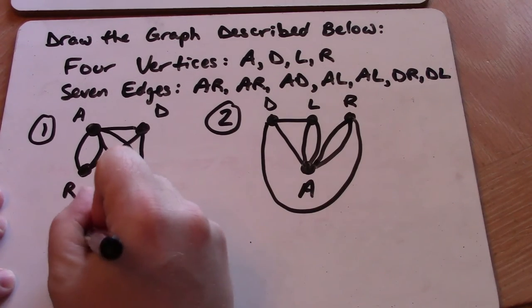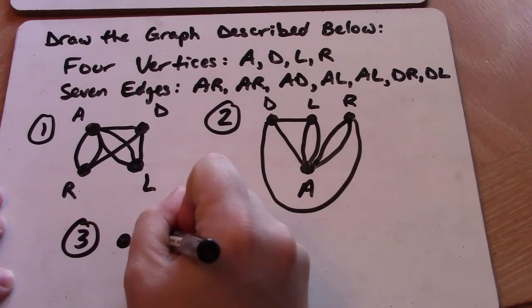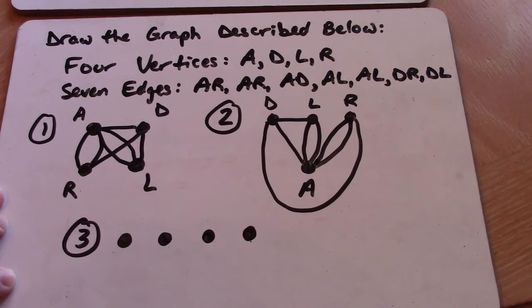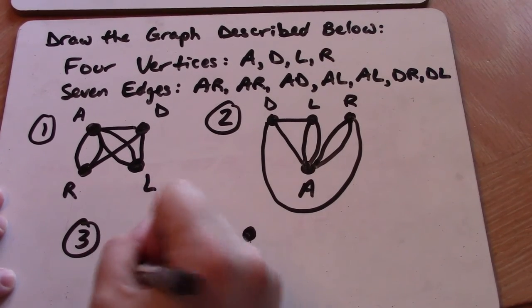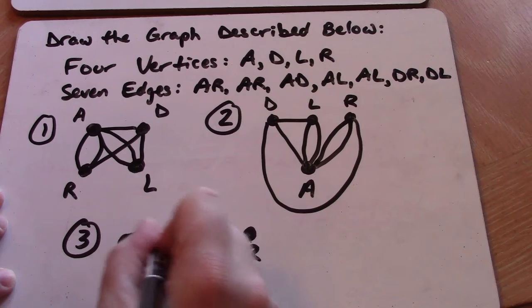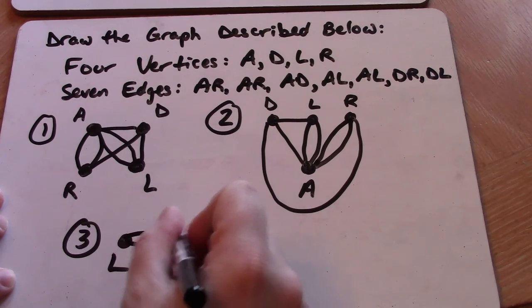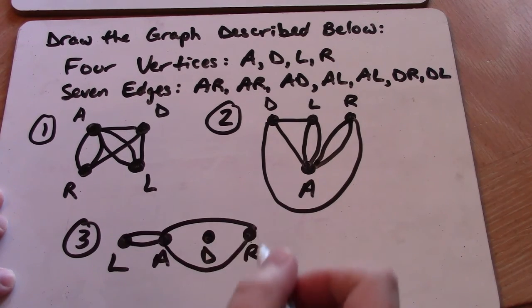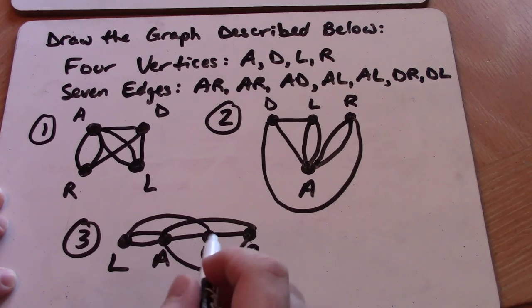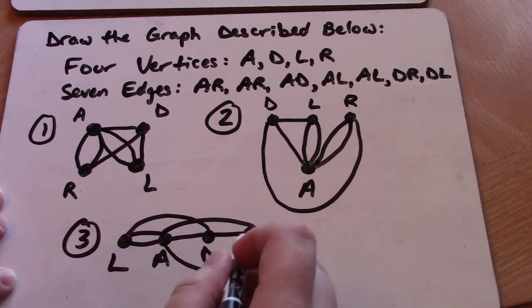Now it doesn't even matter if we want to arrange our four points in a straight line and label them this way. It really doesn't matter. It also doesn't matter what order we put our points. Here we have two edges from A to L, two edges from A to R, one edge from D to L, one edge from D to A, one edge from D to R. Two from A to R, one AD, two ALs, one DR and one DL.